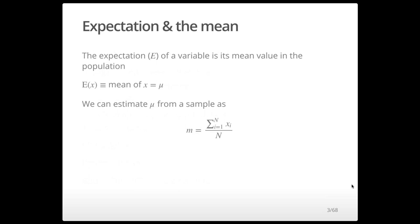Beginning with the mean, we can think of the expectation, or E, of a variable as its mean value in the population. We write this as E of x, and define that to be the mean of x, often using the symbol mu. We can estimate mu from a sample as simply the sum of all observations divided by the number of observations.